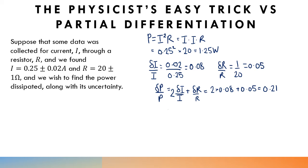So if we just want to find delta P by itself, then the uncertainty in the power, that's going to be 0.21 times P, so 0.21 times 1.25 watts, which is approximately 0.26 watts.